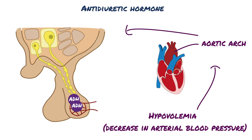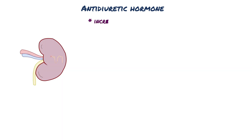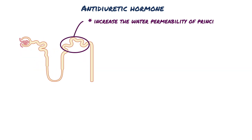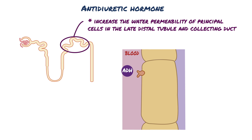ADH has two actions: one on the kidney and the other on vascular smooth muscle. The major action of ADH is to increase the water permeability of principal cells in the late distal tubule and collecting duct. ADH travels to the kidneys and acts on vasopressin receptor 2, or AVPR2, present in the principal cells of the distal convoluted tubule and collecting ducts. When ADH binds to AVPR2, a G-protein inside the cell gets activated, signaling membrane-bound adenylyl cyclase to convert ATP to cAMP.